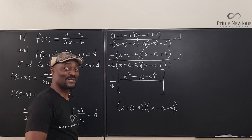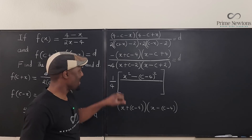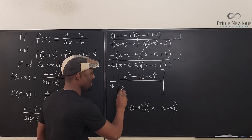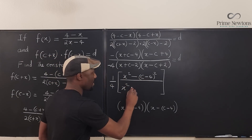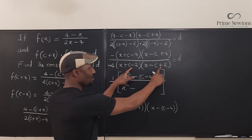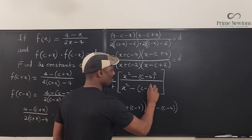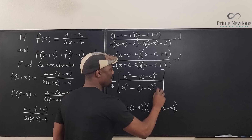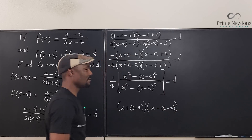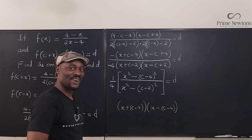The same thing applies to the denominator: it can be written as x squared minus (c minus 2) squared — again a difference of two squares. So the full expression is (x² minus (c minus 4)²) divided by (4 times (x² minus (c minus 2)²)), and this equals d.